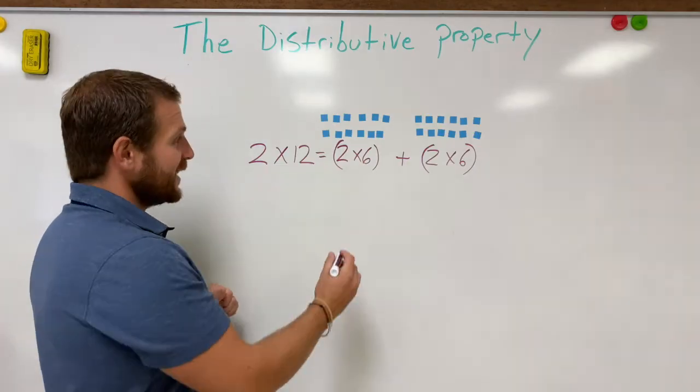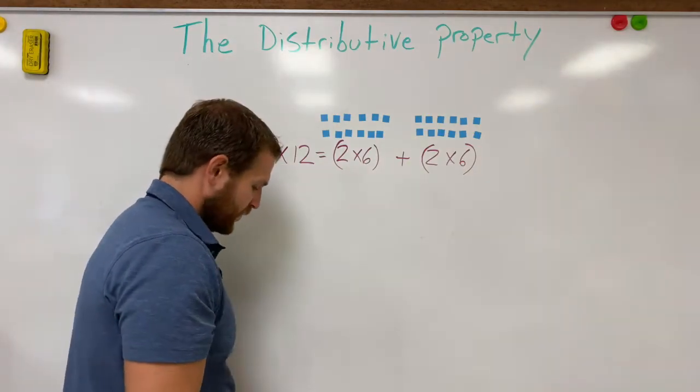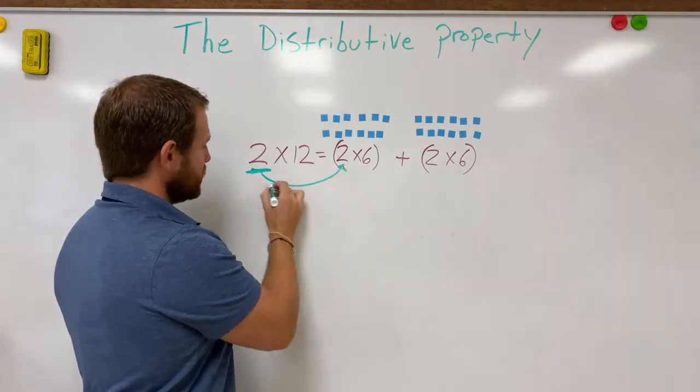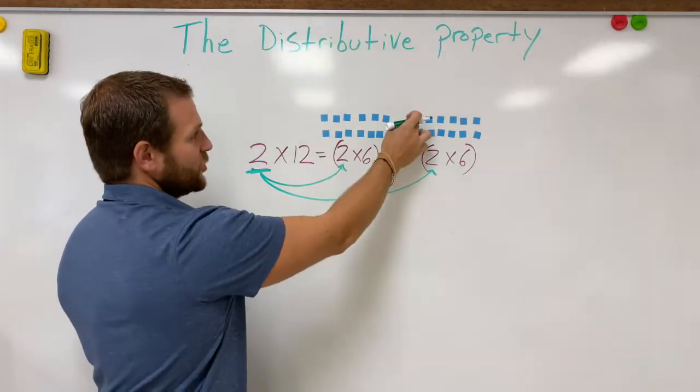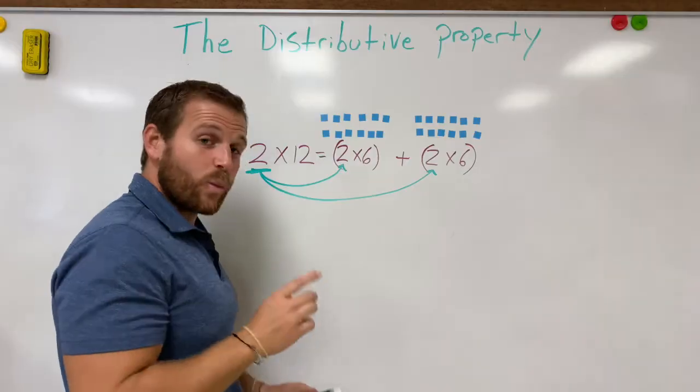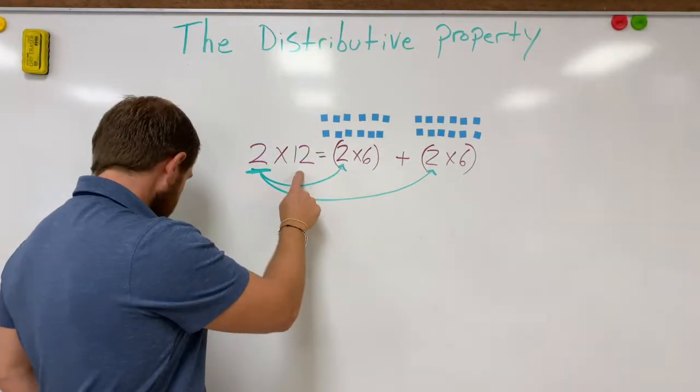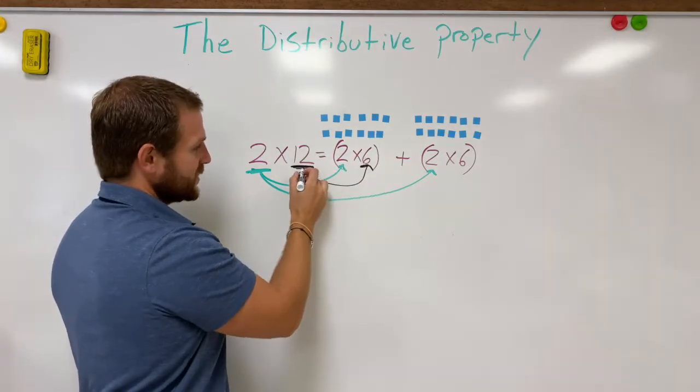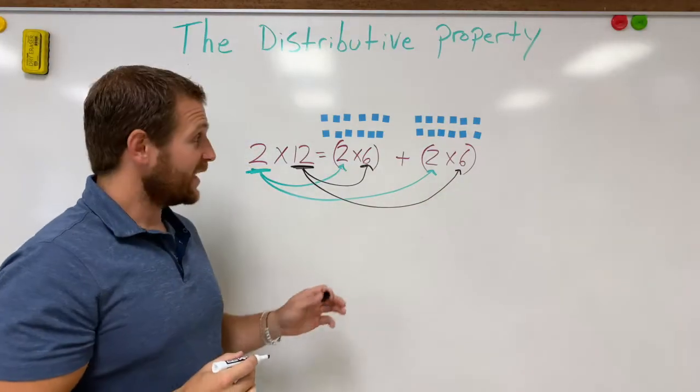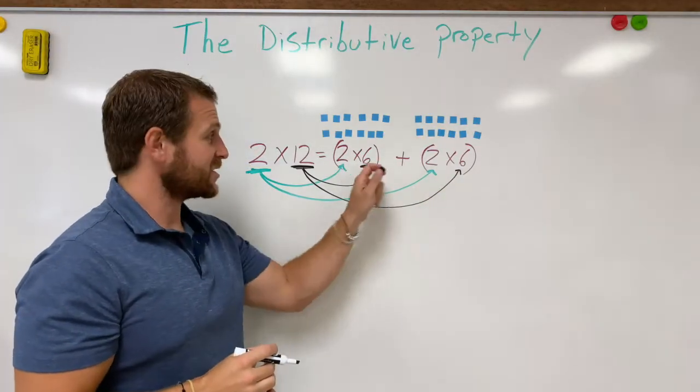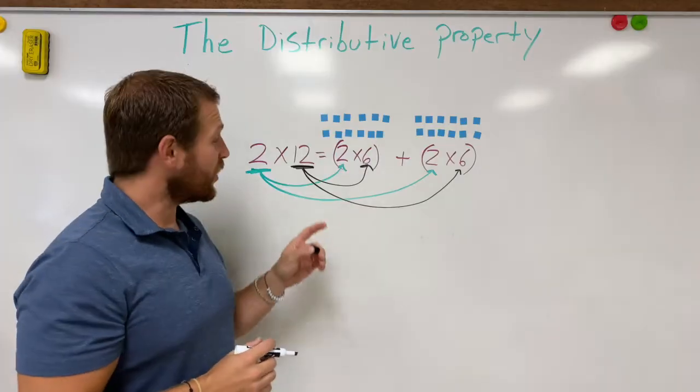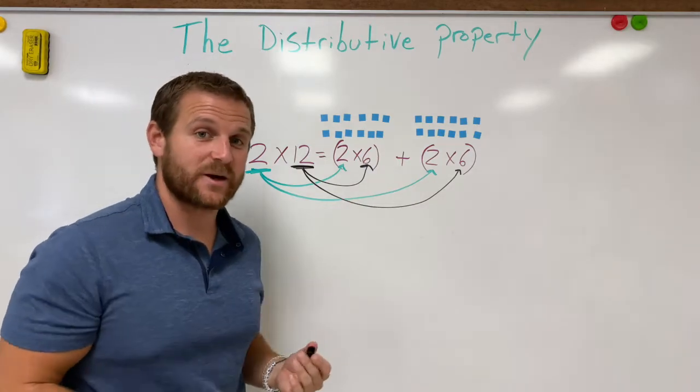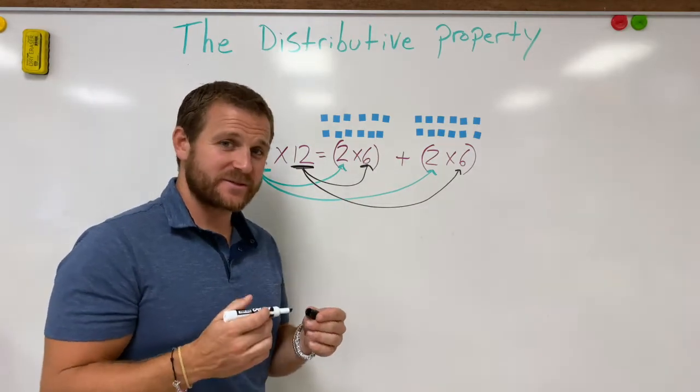Now what I want you to notice about this is take a look at the numbers that stayed the same. So my two groups stayed the same all the way through. I kept two groups the whole time. What I broke up or distributed amongst was my 12 over here. So my 12, which was across the top, was broken up into six and six. And what's really simple about this is six plus six is going to give me that original 12. So all you have to do is pick which number you want to distribute and then break it up into two digits that add up to that original number. Let's look at a couple of samples to try and make some sense of that.